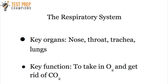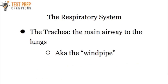Let's now talk about the respiratory system. The key organs to remember are the throat, the nose, the trachea, and the lungs. The key function of the respiratory system is to take in oxygen and get rid of carbon dioxide. The trachea is the main airway into the lungs, and is more commonly called the windpipe.